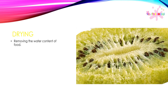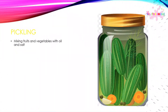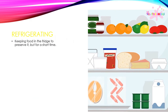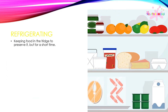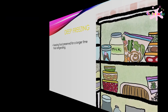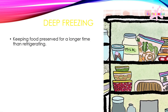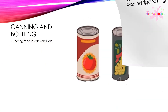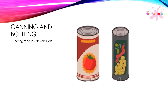Methods of food preservation include: drying — removing the water content of food; pickling — mixing fruits and vegetables with oil and salt; refrigerating — keeping food in the fridge to preserve it, but only for a short time; deep freezing — keeping food preserved for longer than refrigerating; and canning and bottling — storing food in cans and jars.